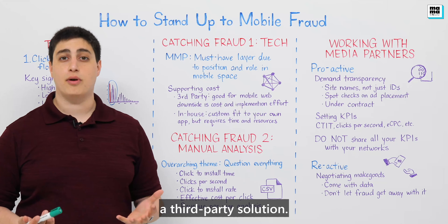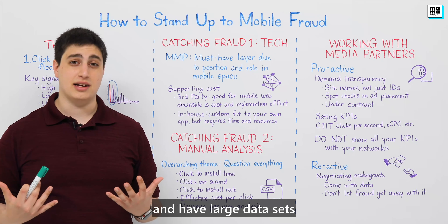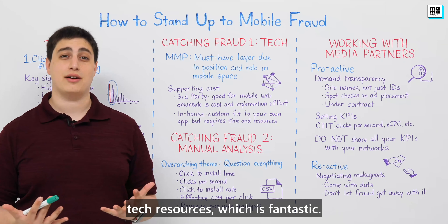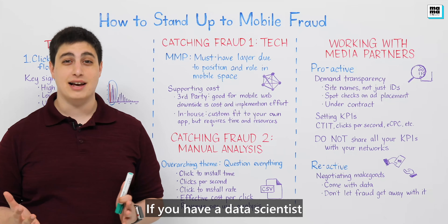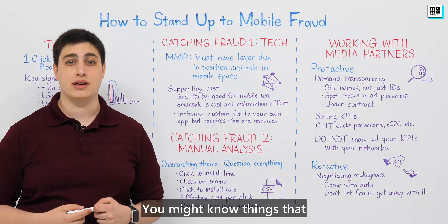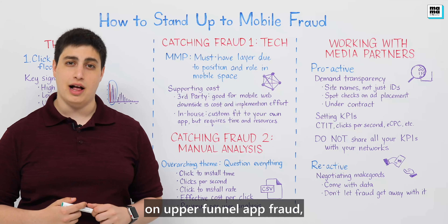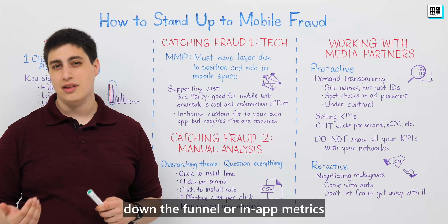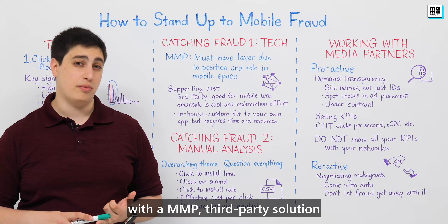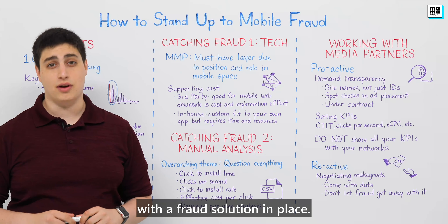You can also implement a third-party solution — there are options such as Scalar or Forensic that do very similar analyses and have large data sets that can supplement what you're seeing from an MMP. You may also have internal tech resources. If you have a data scientist well-versed in mobile, it couldn't hurt to add an additional layer of bespoke analysis. You could go full throttle with an MMP, a third-party solution, and an in-house data scientist, but a good MMP with a fraud solution will catch a good amount.